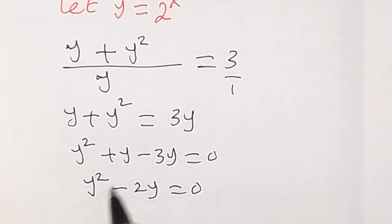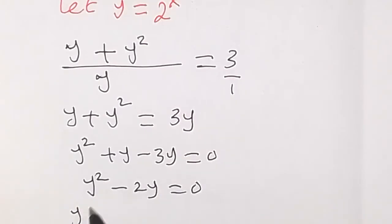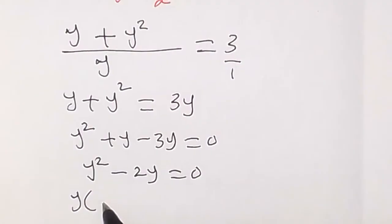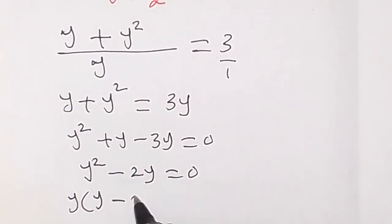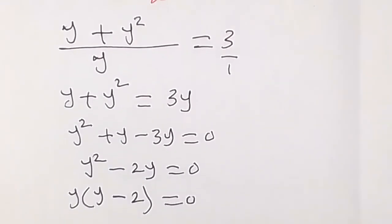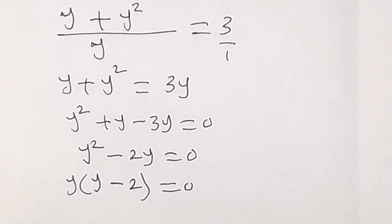We can easily solve this by factoring. y is common here in y square and 2y, so we can bring y out and here remain y inside, then minus 2 left here, then equals to zero.